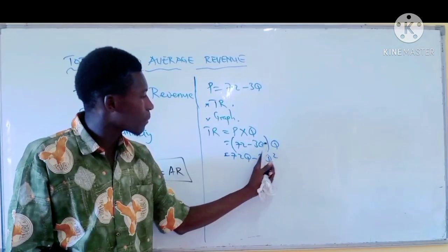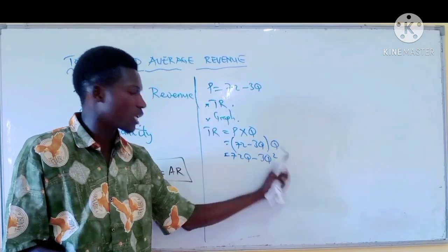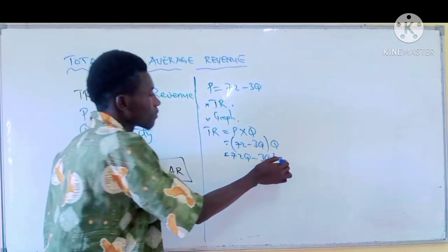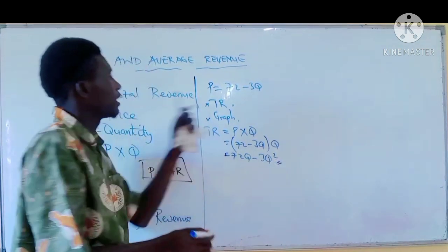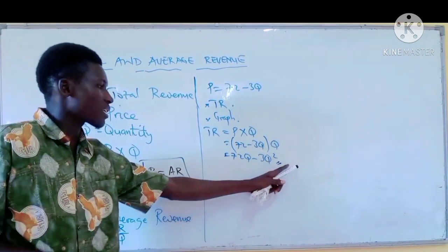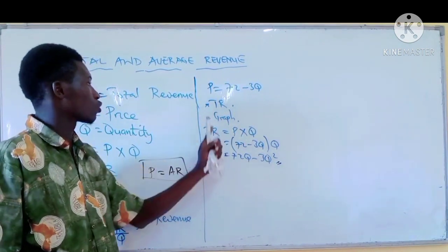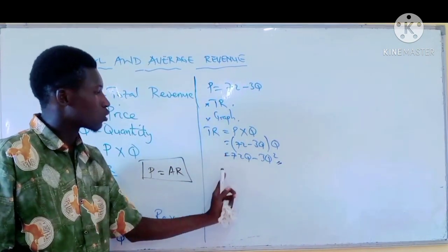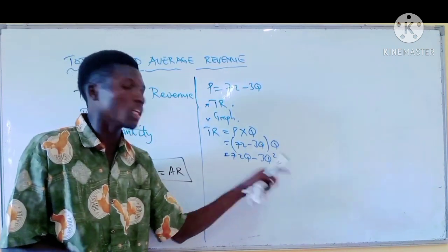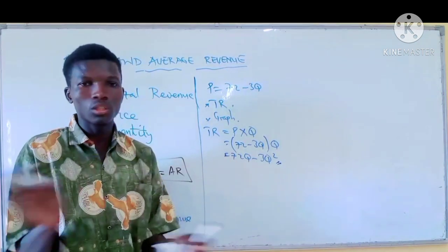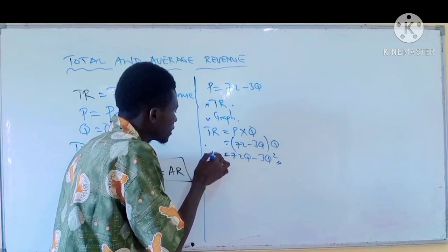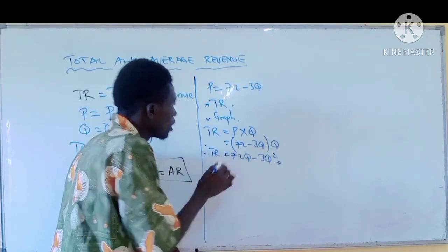3Q times Q is 3Q squared. So TR equals 72Q minus 3Q squared. That is your total revenue. As easy as that, your total revenue equals 72Q minus 3Q squared.